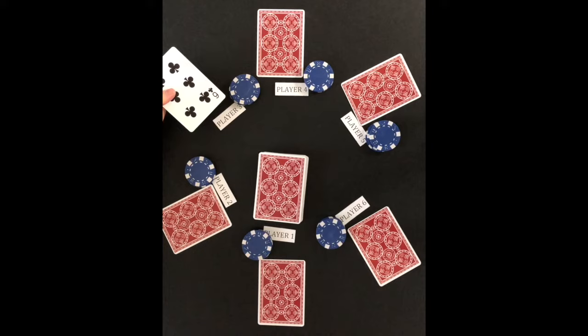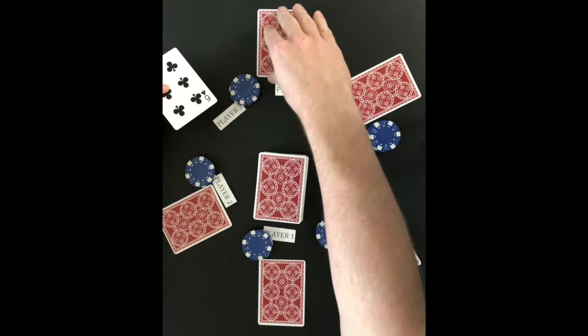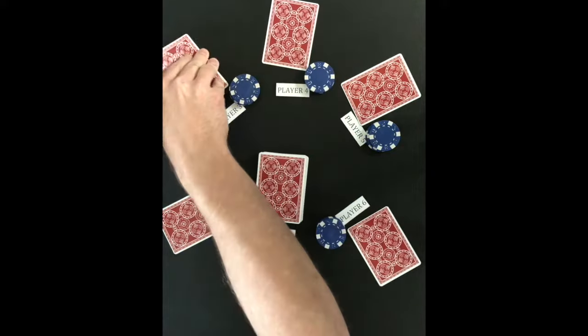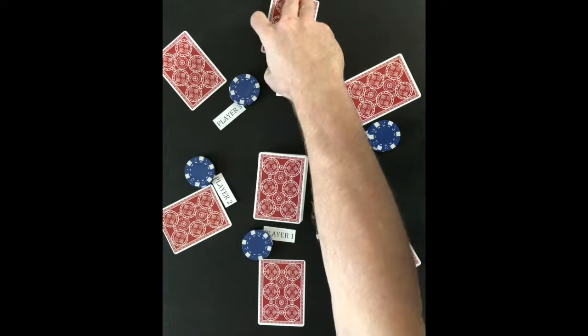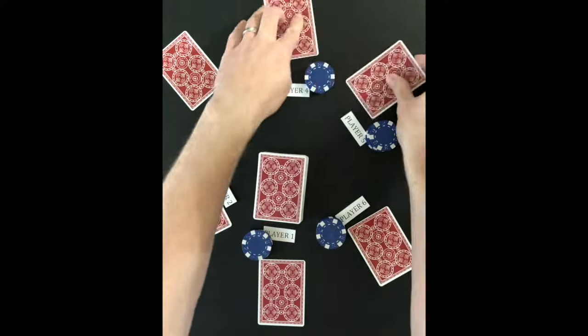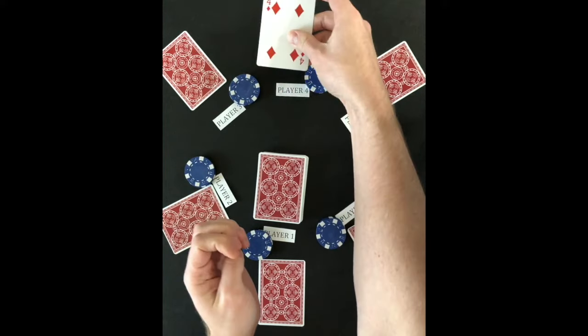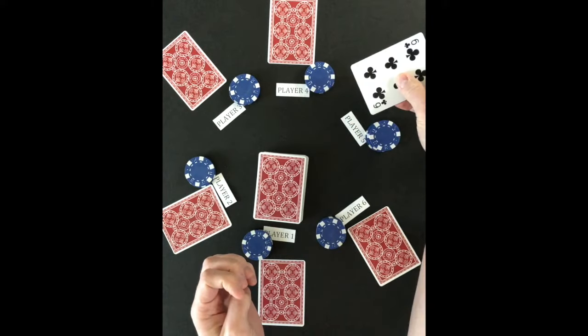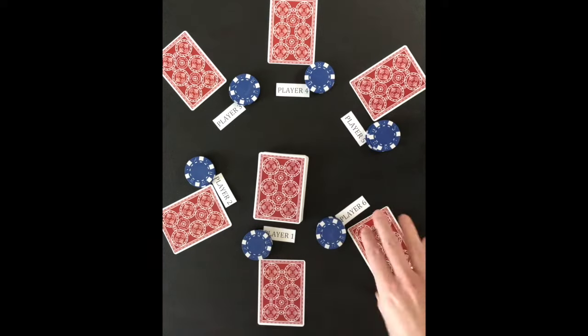Player three looks at the card and decides to exchange it. Player four has to give player three his card. It is player four's turn now who decides to exchange with player five. Player five makes the exchange and now knows that the six is higher than the four from the exchange. Player five keeps the six.